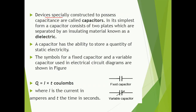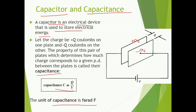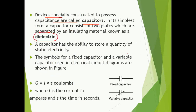The devices specially constructed to possess capacitance are known as capacitors. There is a distance between both parallel plates, so there is some substance filled between them — that is known as dielectric. This is the symbol of a capacitor: two parallel plates connected together with a distance. If there is an arrow in between, that is known as a variable capacitor.